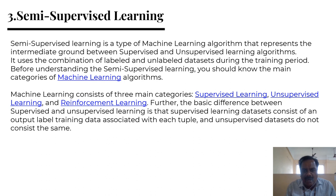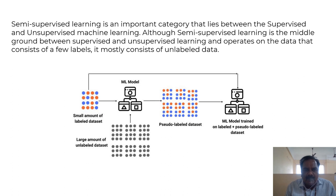Semi-supervised learning is a type of machine learning that uses a combination of labeled and unlabeled datasets. It consists of a small amount of labeled data and a large amount of unlabeled data. The machine learning model uses both types to produce a labeled output, combining the benefits of supervised and unsupervised learning.